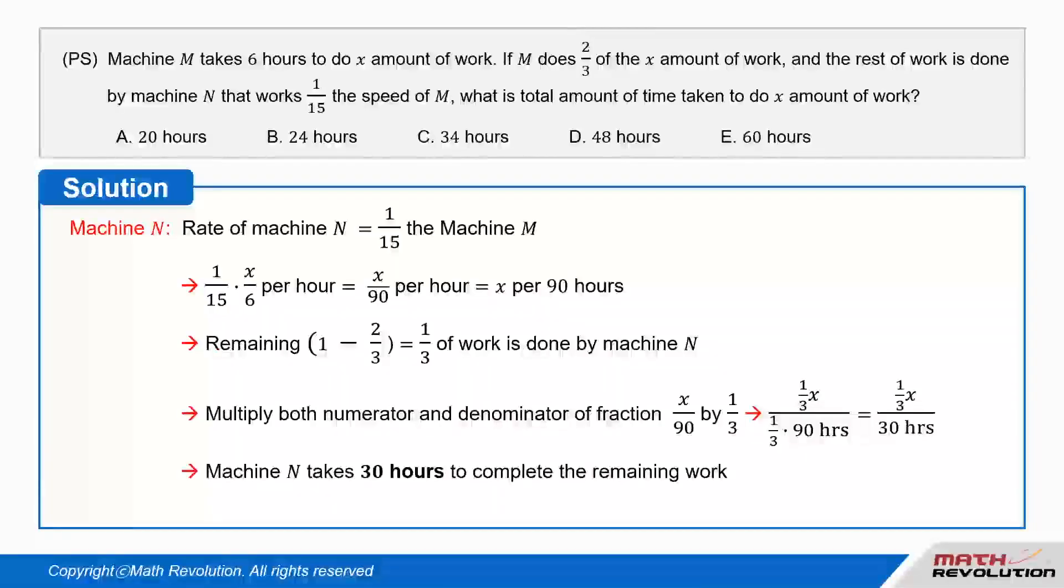Multiply both numerator and denominator of fraction X/90 by 1/3. Then, (1/3 × X)/(1/3 × 90 hours) = (1/3 × X)/30 hours. Thus, Machine N takes 30 hours to complete the remaining work.